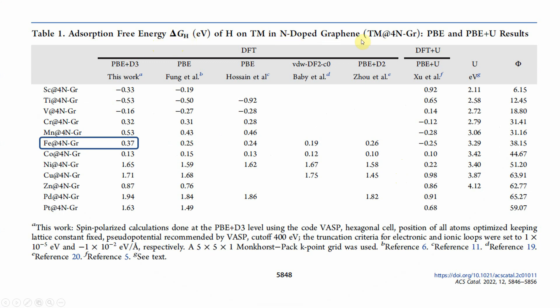This system is N-doped graphene — specifically a FeN4 graphene system. They showed PBE and PBE+U results, and also calculated with the PBE-D3 method. We also calculated using the PBE-D3 method, especially for the Fe atom. We will compare our hydrogen adsorption energy with theirs in the next slides.